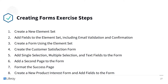These are the steps we have for this exercise: create a new element set; add fields to the element set, including email validation and confirmation; create a form using the element set; create the customer satisfaction form; add single selection, multiple selection, and text fields to the form; add a second page to the form; format the success page; create a new product interest form and add fields to the form.